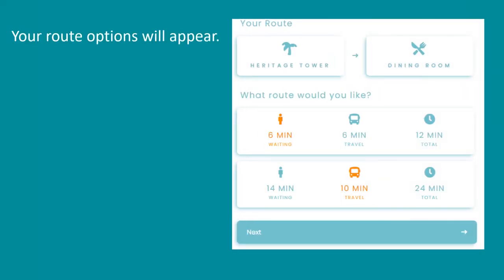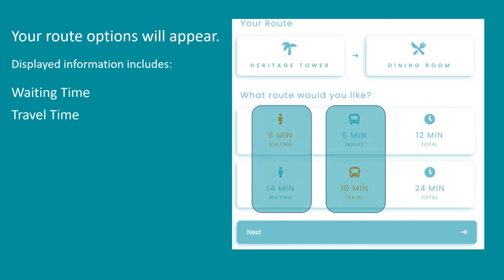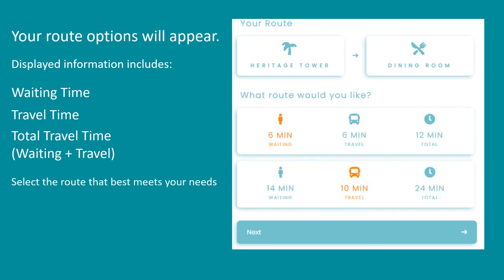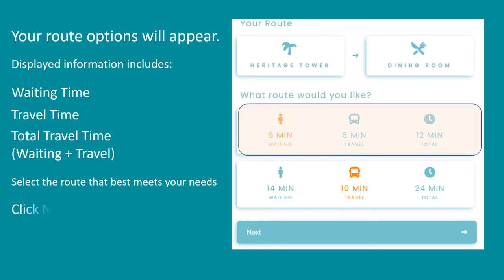Your route options will appear. The displayed information includes the waiting time, the travel time, and the total travel time, which is your waiting time plus your travel time. Select the route that best meets your needs, then click Next.